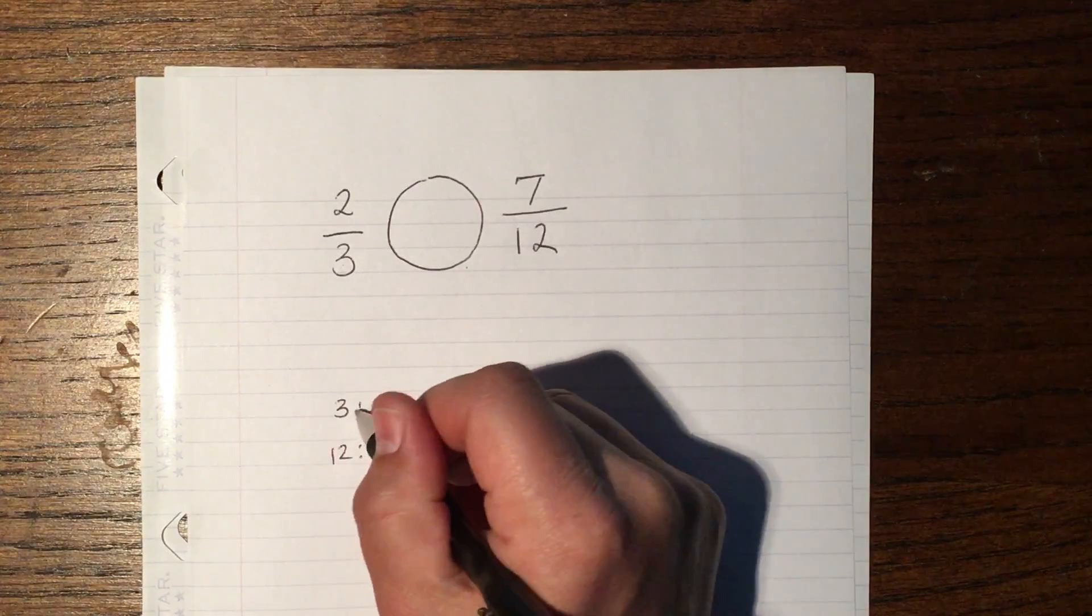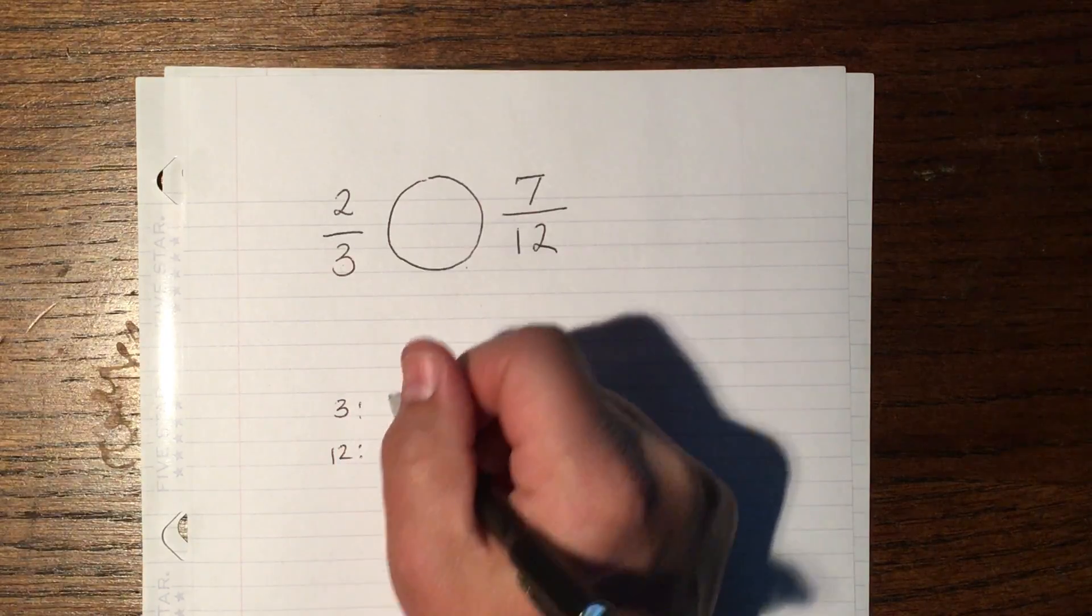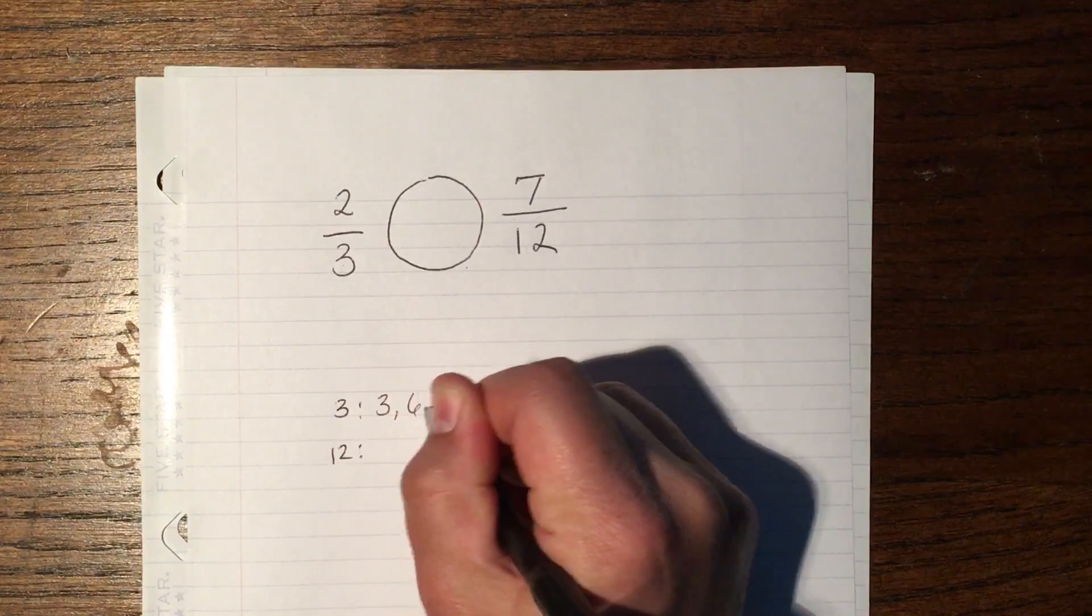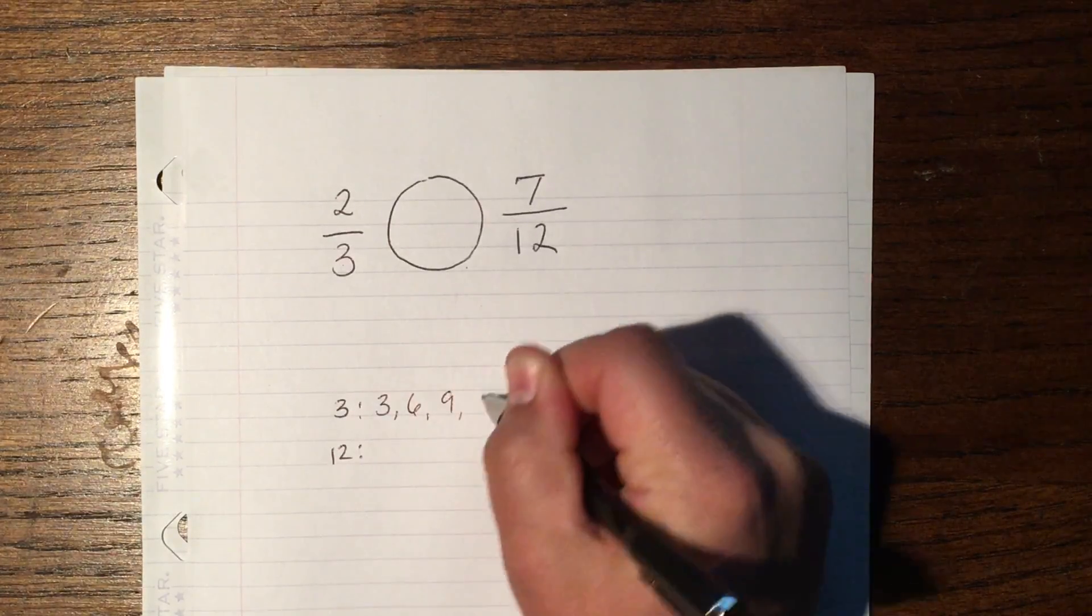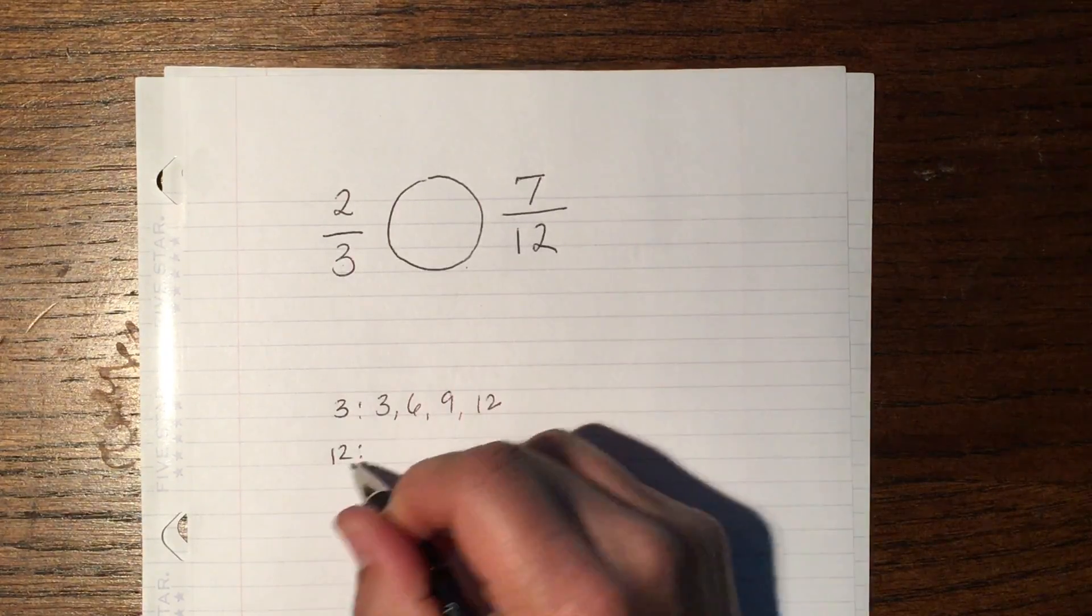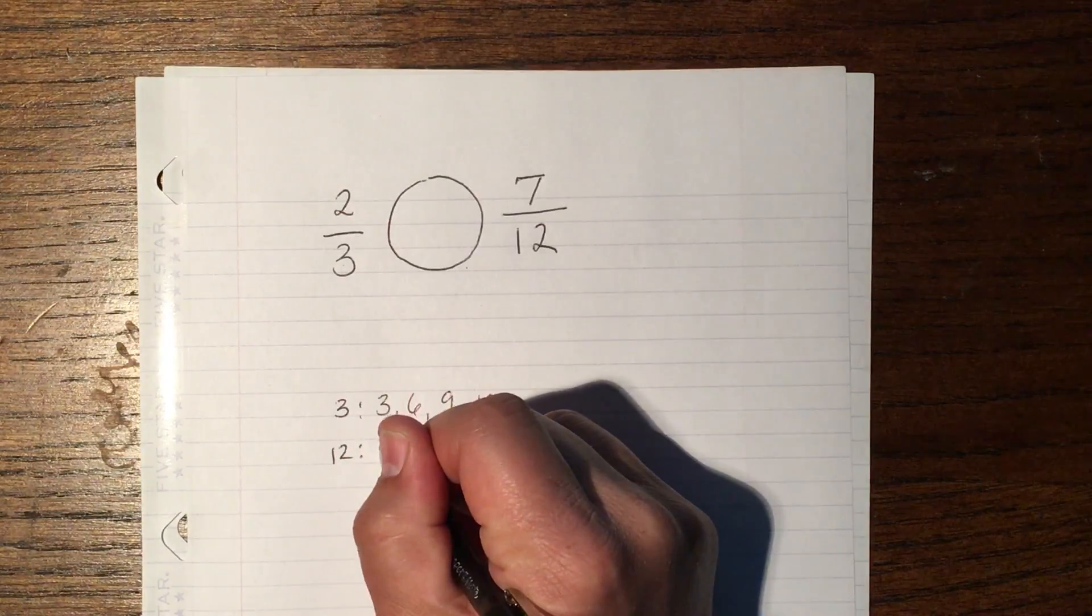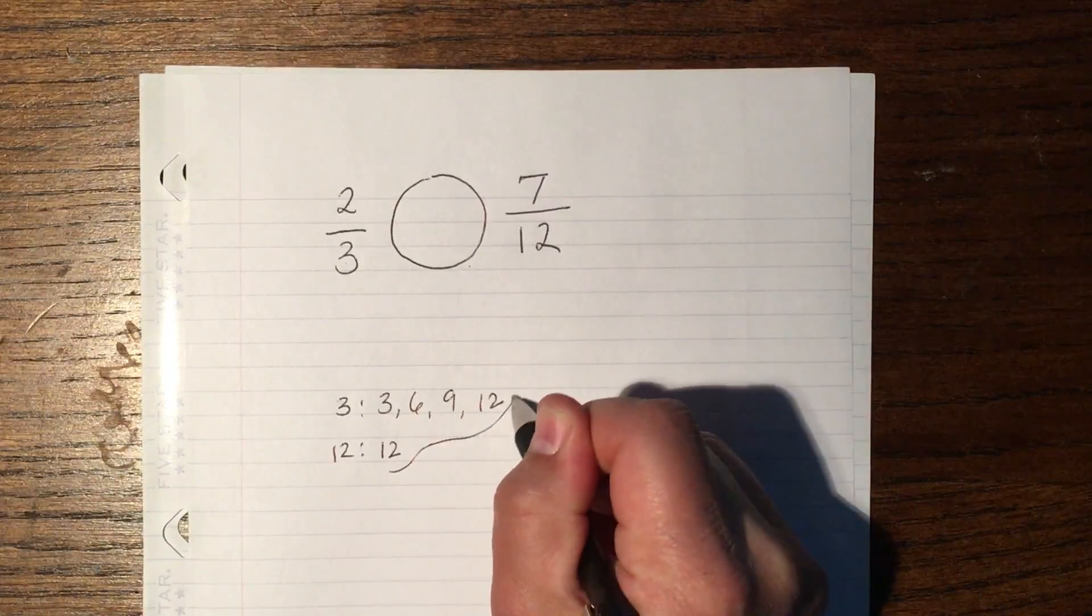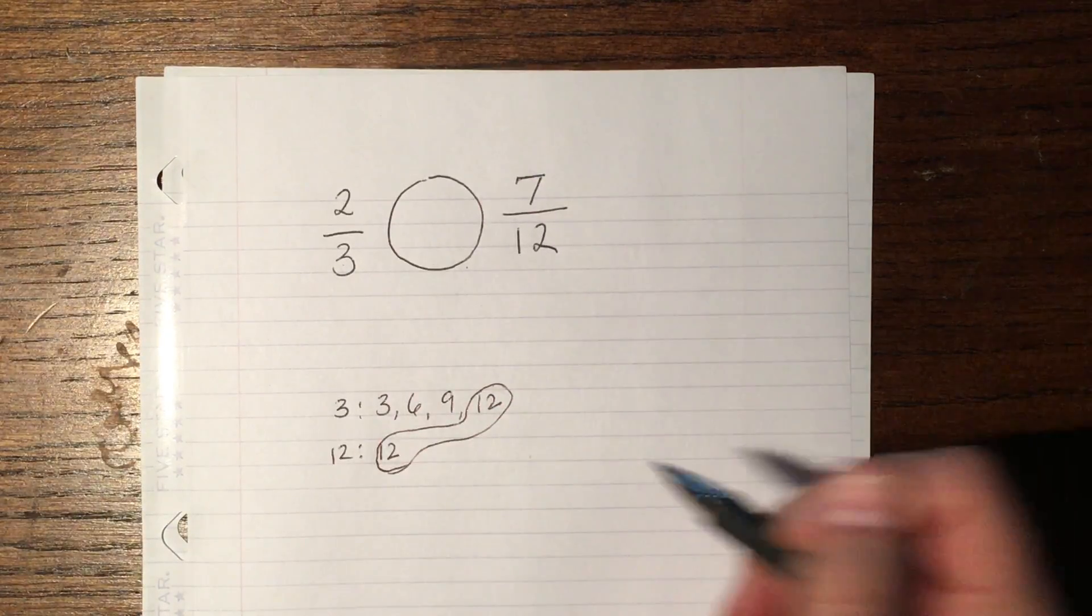I'm going to start with the smaller number in case I run into the larger number. So I'm going to go 3, 6, 9, 12, and I do happen to run into 12. 12 is also a multiple, so you want to put that down. We call it peanuts because when I make a match, I circle them and it looks like a peanut.